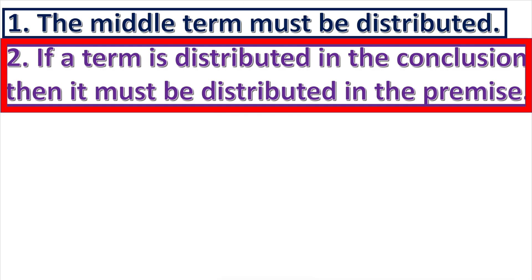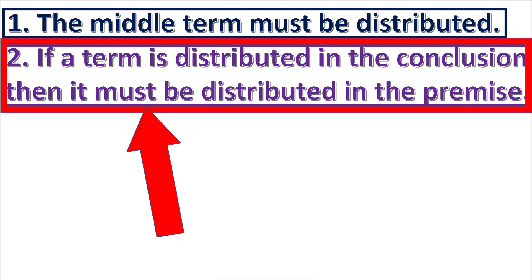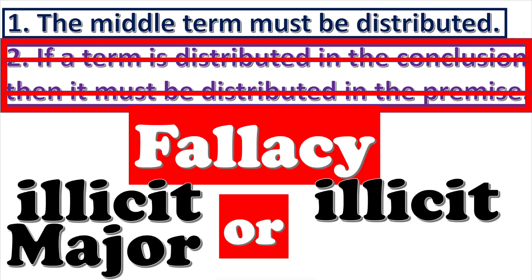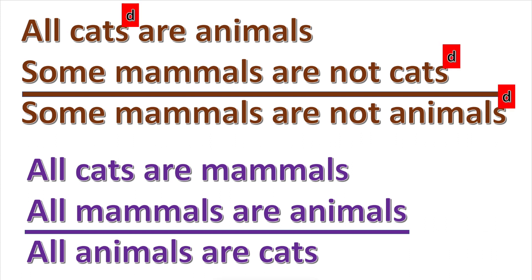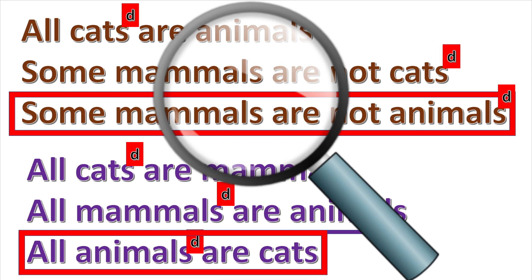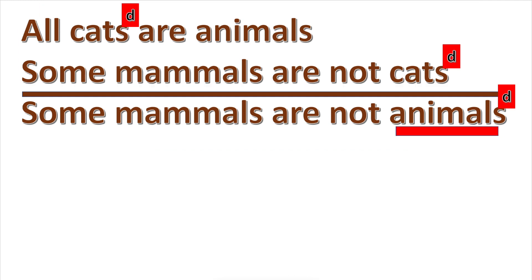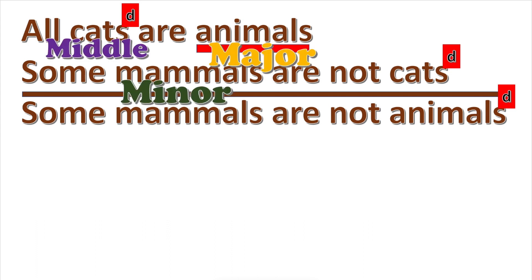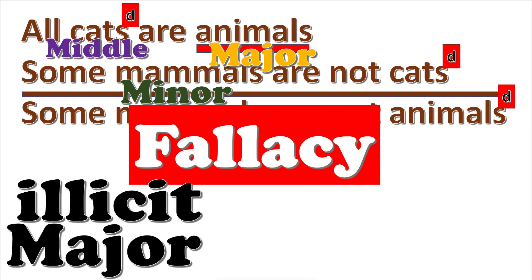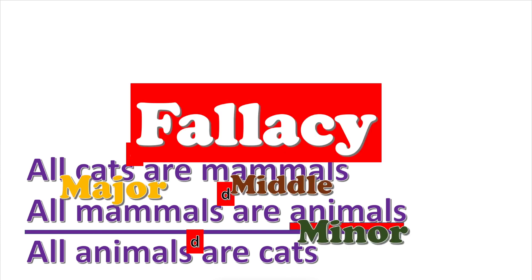Rule two says that if a term is distributed in the conclusion, then it must be distributed in the premise. If this rule is broken, then the fallacy of illicit major or illicit minor is committed, depending on which term is in violation. First, mark all distributed terms. Then look at the conclusion — if a term is distributed there but not in the premises, and it is the major term, the syllogism commits the fallacy of illicit major. If it is the minor term, it commits the fallacy of illicit minor.